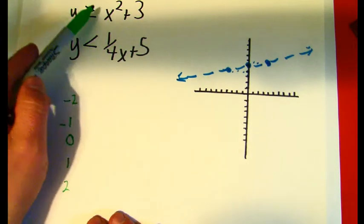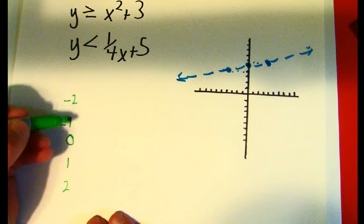So if I plugged in 0 here, I'd get 0 squared, which is 0, plus 3 more would give me 3.